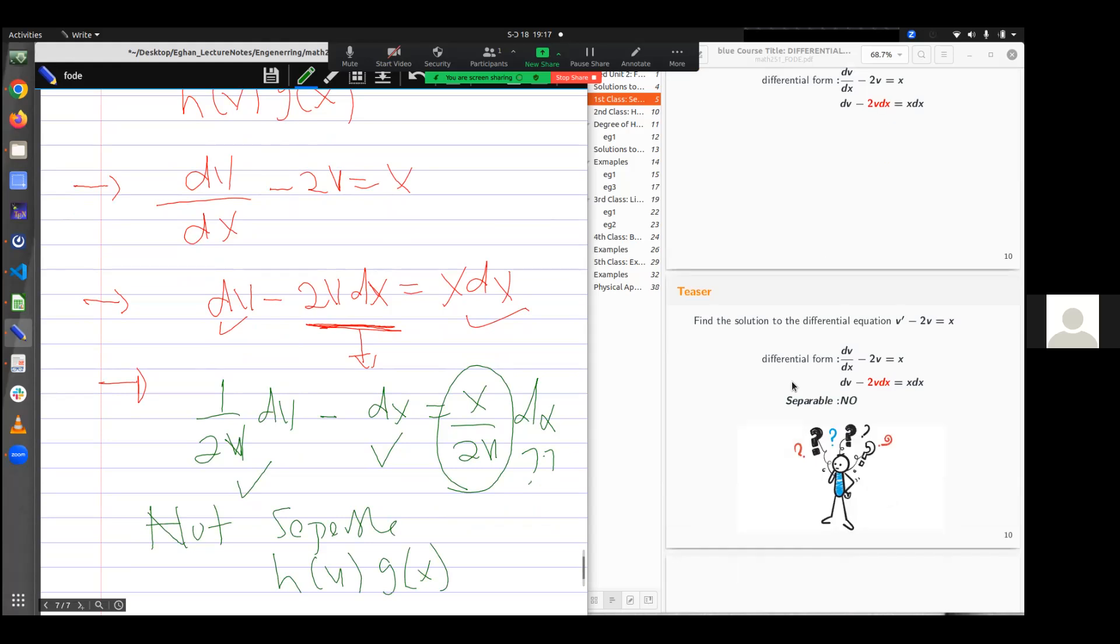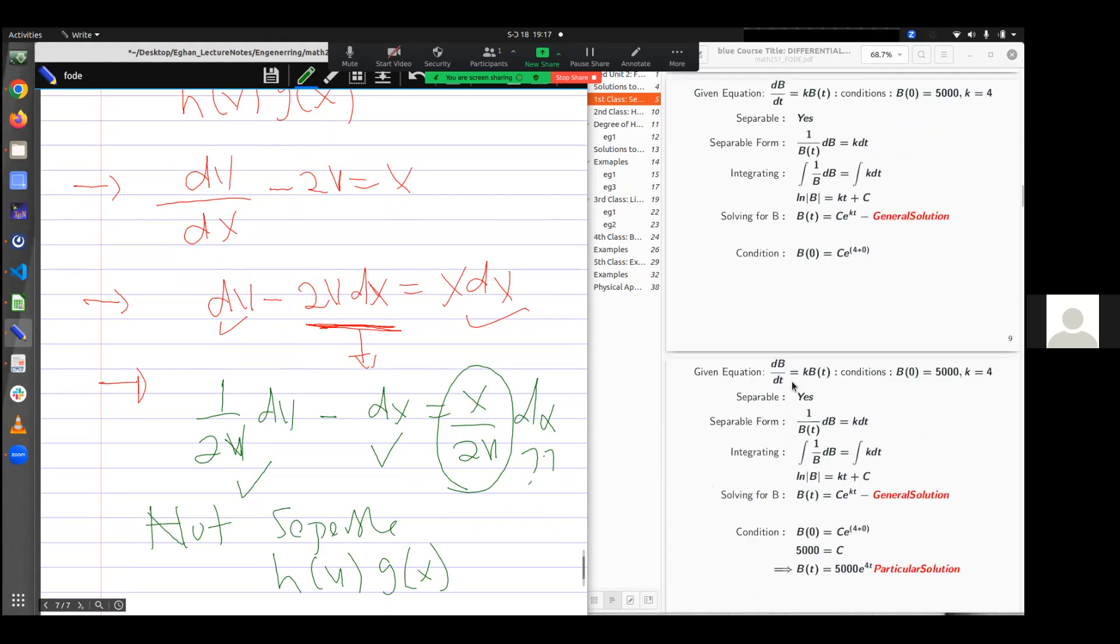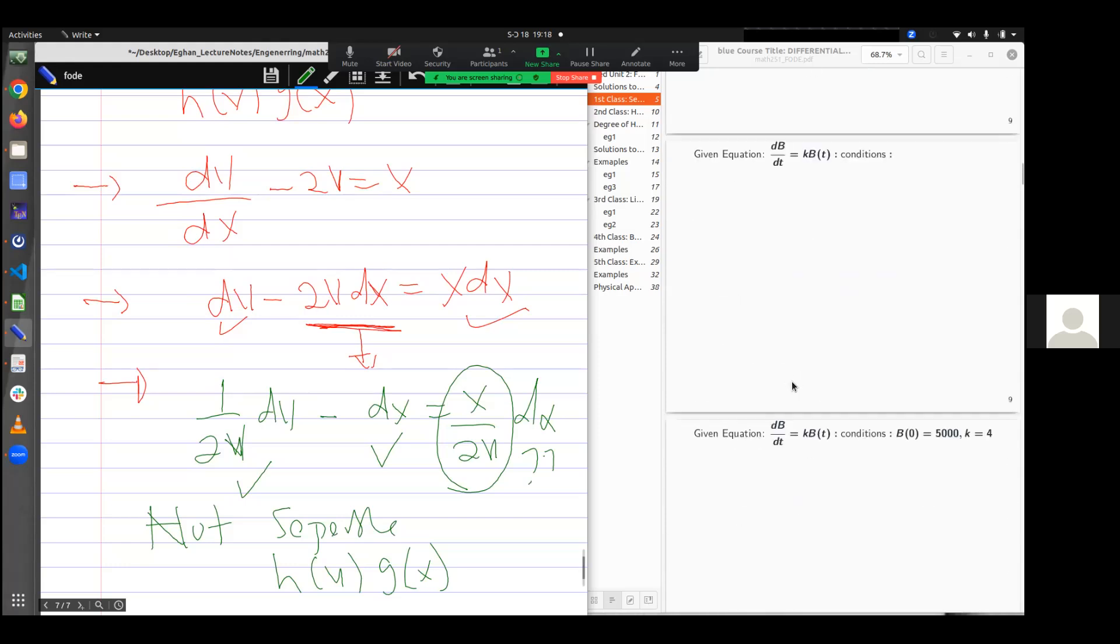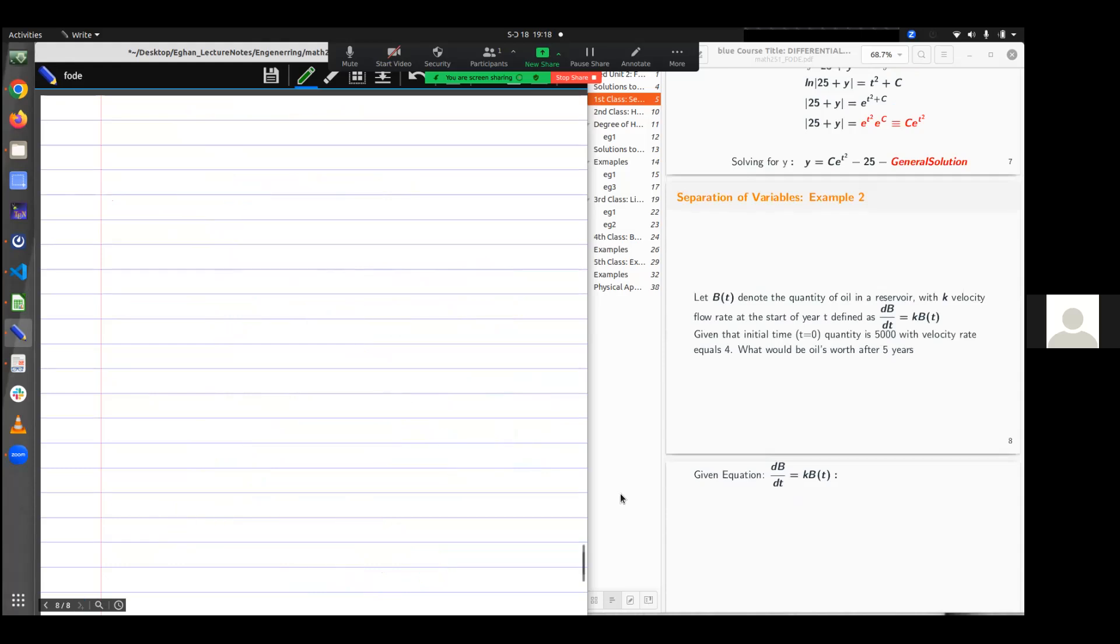So what do I do? That will lead us to the next category of first order differential equations. But before that, I had a word problem here. Let's see if it is separable. Let B denote the quantity of oil in a reservoir defined as db/dt is equal to k*b*t.